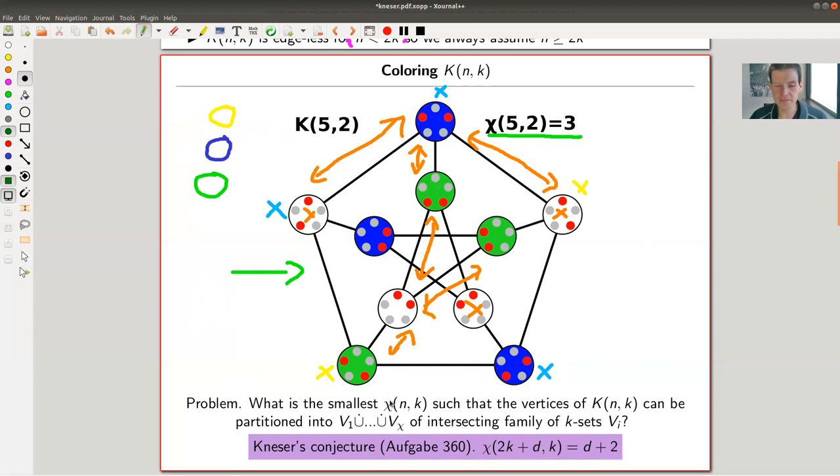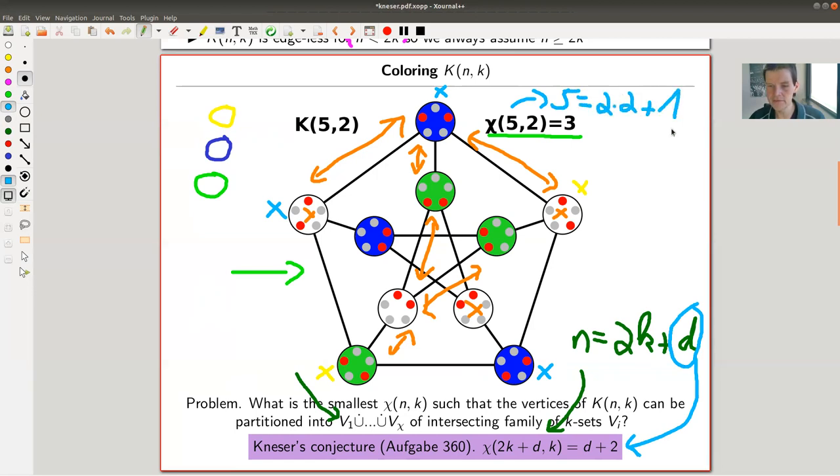And the problem Kneser was asking is, well what is the smallest number? In other words, what is the smallest number such that you can partition your K element subsets into χ sets of intersecting families of K sets? That's just the finite set theoretical version of the same question. So Kneser conjectured that this number is d+2 in the following setup when N is certainly bigger than 2K and just whatever, the amount that is bigger that's d. And Kneser said okay it's this minimal coloring is d+2. So in this case five is two times two plus one, so d is one, this is d, so d+2 is of course three. So in this case Kneser's conjecture holds, would be a little bit surprising if it wouldn't hold for such a small example. And the point is to prove it in general.